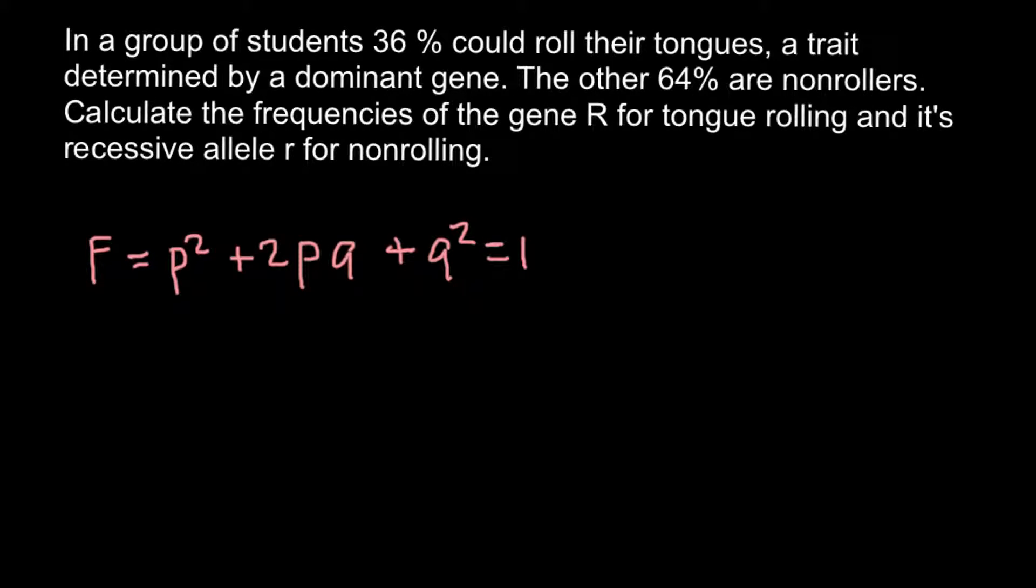As you see in this formula, we have allele p and allele q, two alleles. In our problem we also have two alleles: one is dominant capital R and another is recessive small r.